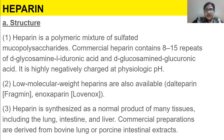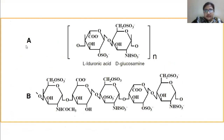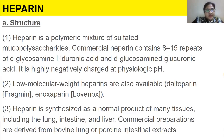Starting with heparin. Heparin is a polymeric mixture of sulfated mucopolysaccharide. Commercial heparin contains 18 to 15 repeated units of D-glucosamine, L-iduronic acid, and D-glucosamine glucuronic acid. It is a polymer made up of L-iduronic acid and D-glucosamine. It is highly negatively charged at physiological pH — this is a very important point.